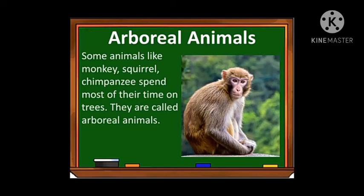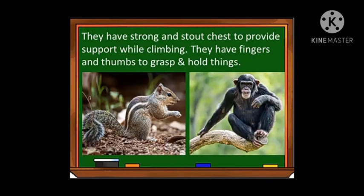The last category is arboreal animals. Some animals like monkeys, squirrels, and chimpanzees spend most of their time on trees. They have strong and short chest to provide support while climbing. They have fingers and thumbs to grasp and hold things — as you can observe in the picture, a squirrel is holding something in its hand. The strong chest helps them climb trees where they spend most of their time.